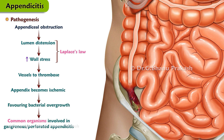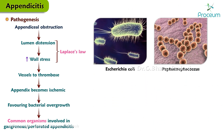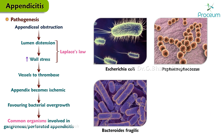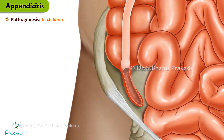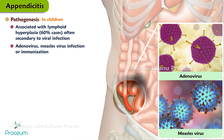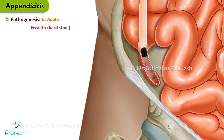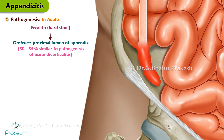Common organisms involved in gangrenous and perforated appendicitis include E. coli, Peptostreptococcus, Bacteroides fragilis, and Pseudomonas species. In children, pathogenesis is usually associated with lymphoid hyperplasia in about 60% of cases, often secondary to a viral infection like adenovirus or measles. In adults, the most common cause is a fecalith, which is a hard stool that obstructs the proximal lumen of the appendix in about 30 to 35% of cases, similar to the pathogenesis of acute diverticulitis.